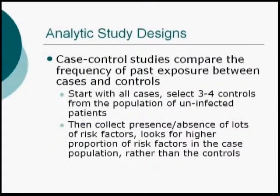Case-control studies are most frequently seen in infection literature. Here is where we start with disease status — I know that these people have disease, I know that these people do not have disease. And then I want to go back and look at a large number of different risk factors to see if any of them are related. In general, for every one of your cases, you'll select three or four people from the at-risk population to serve as controls. If you can find one risk factor in higher proportion in the cases than the controls, that's where you start to be able to think there may be a causal association between these patients.